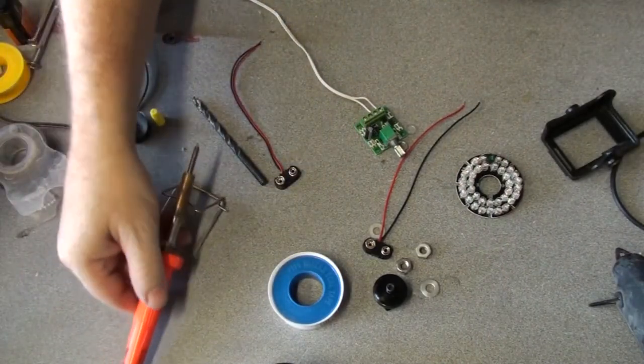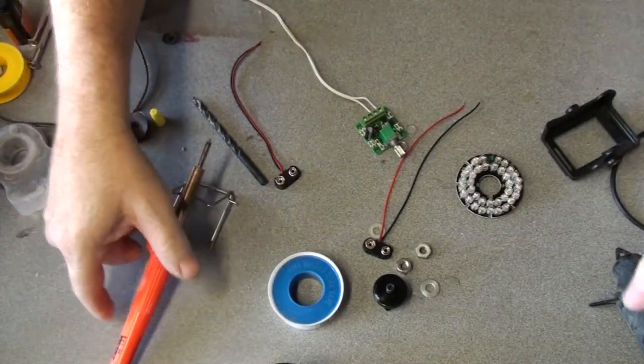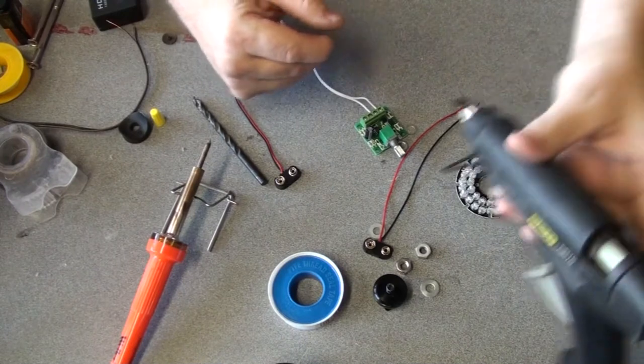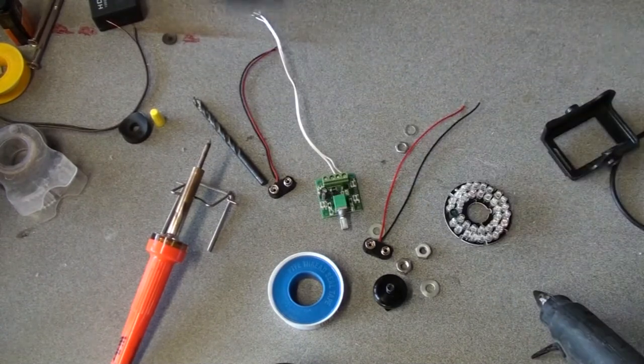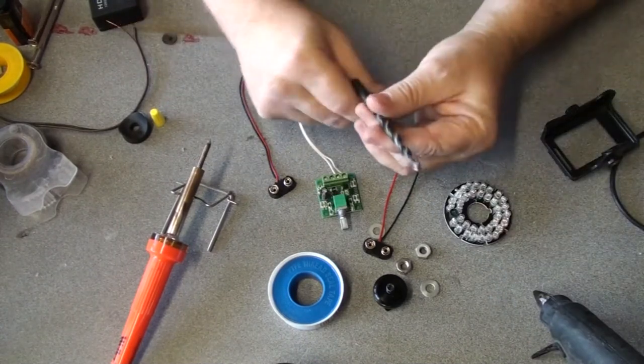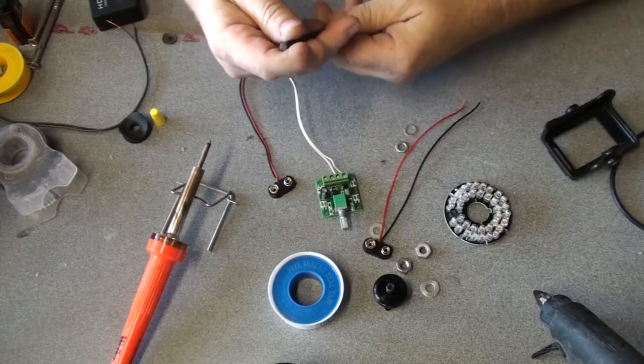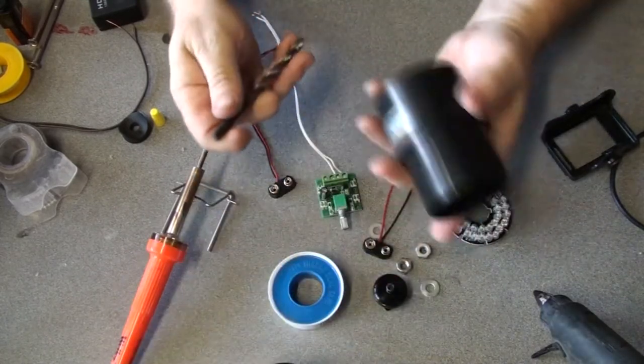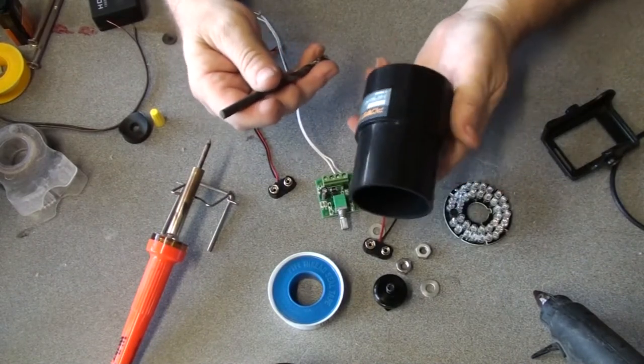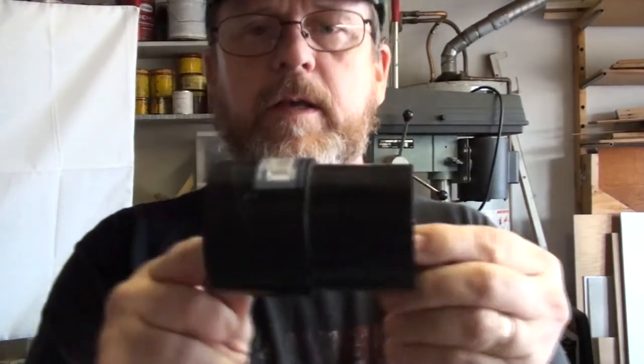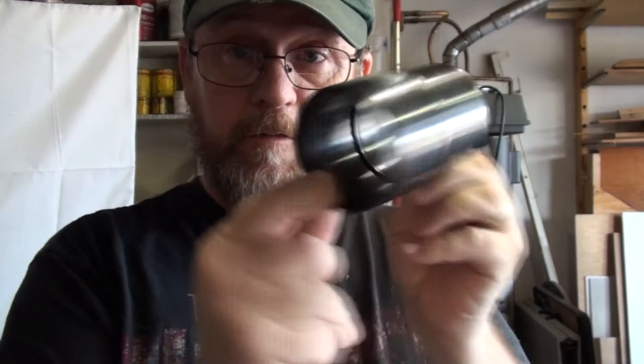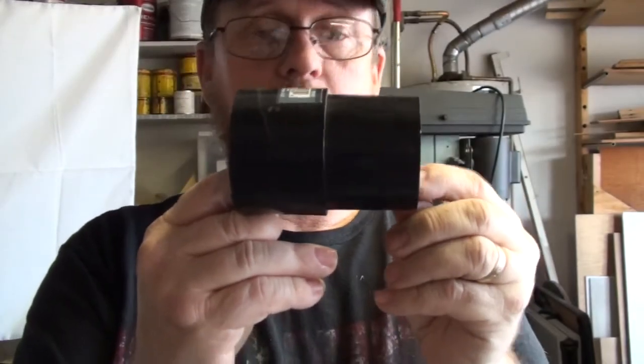You'll need a soldering iron as well as a hot glue gun. Other things that we're going to need is just a quarter inch drill and something to use to drill into our reducer. That's the first thing I'm going to do. I want to drill a hole into my reducer. This is actually the body of my IR illuminator.